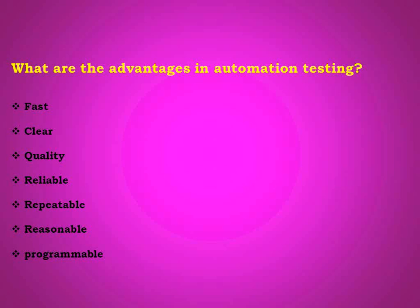In automation also we have some drawbacks. Wherever you go, still 80 to 90 percent of companies are still depending upon manual processes. The main drawbacks in automation testing: first drawback - professionals are required. If it is manual testing, we can give training within one week and bring them into the project. But if it is automation, some scripting knowledge is required, meaning professionals are required.